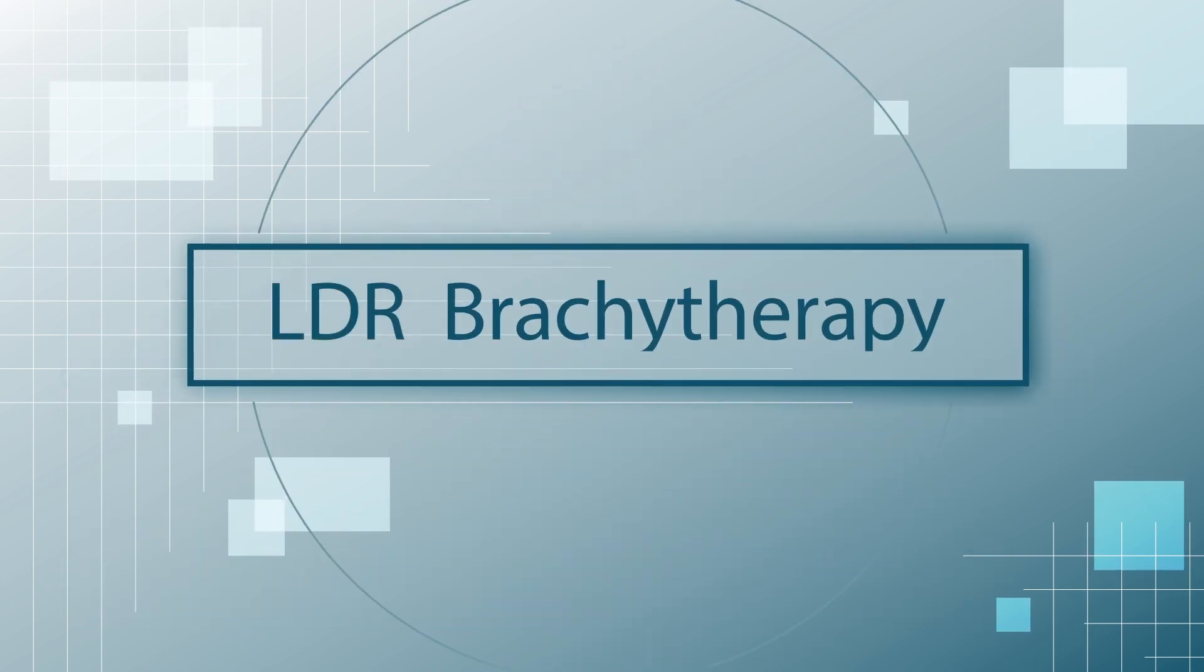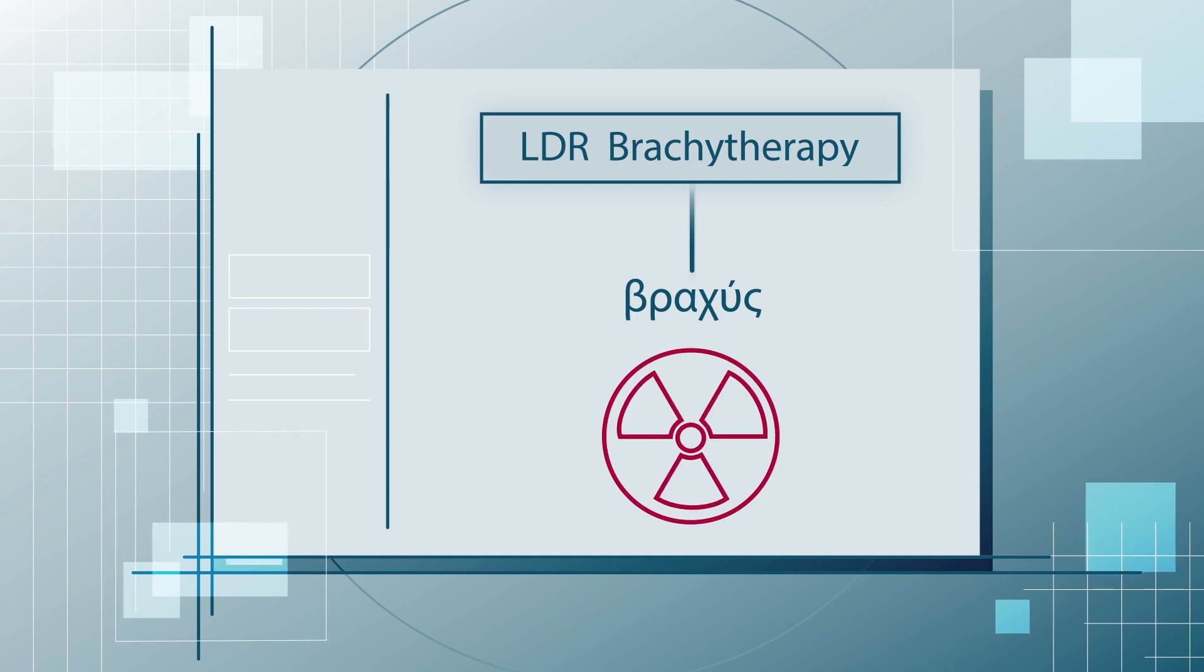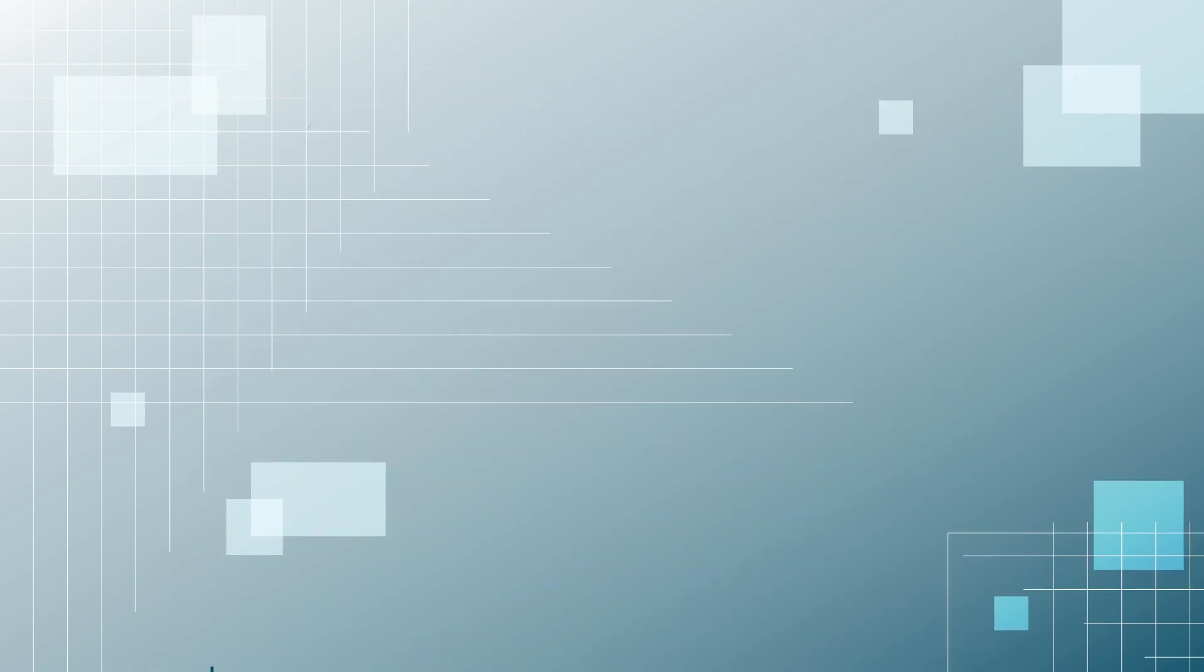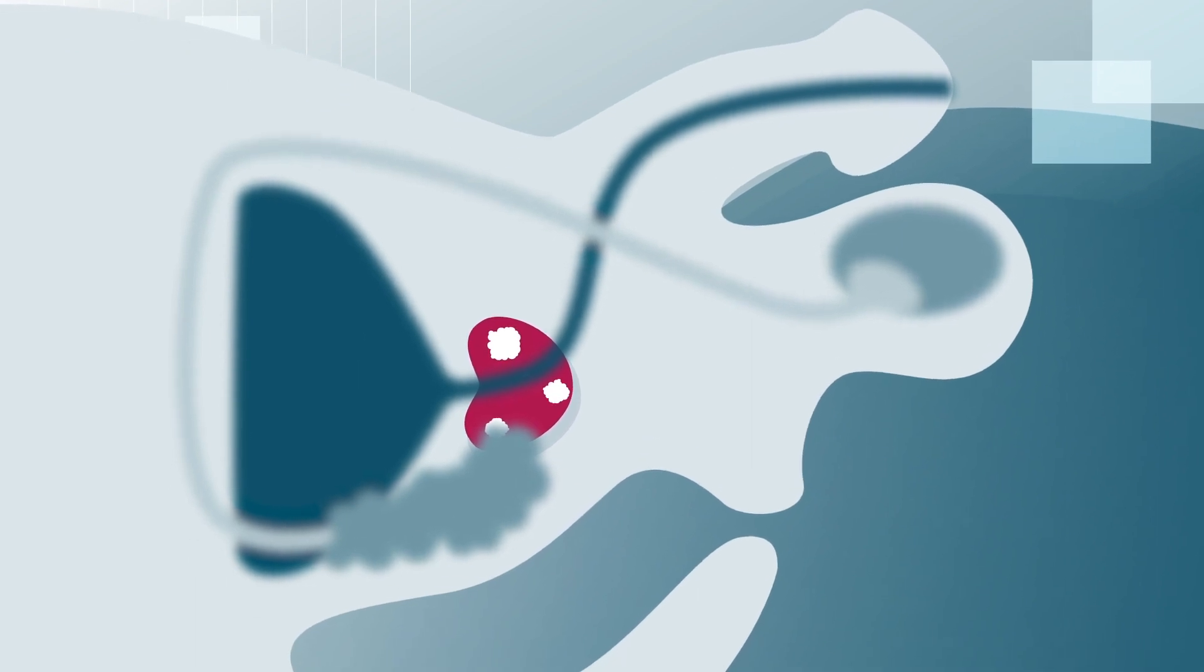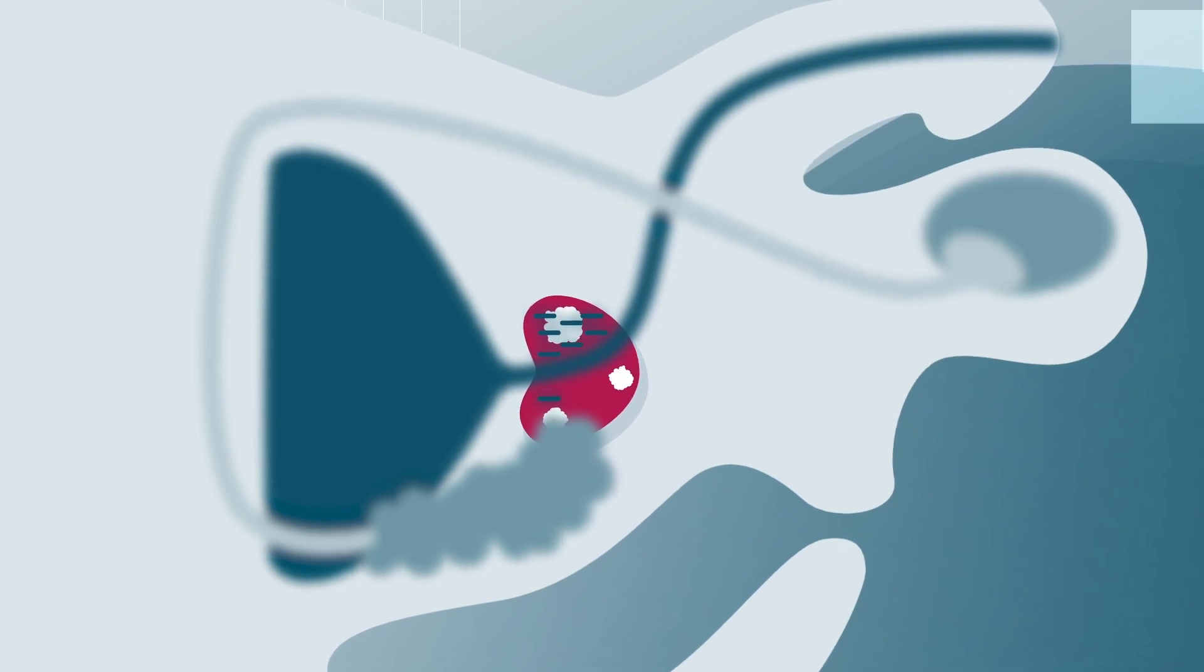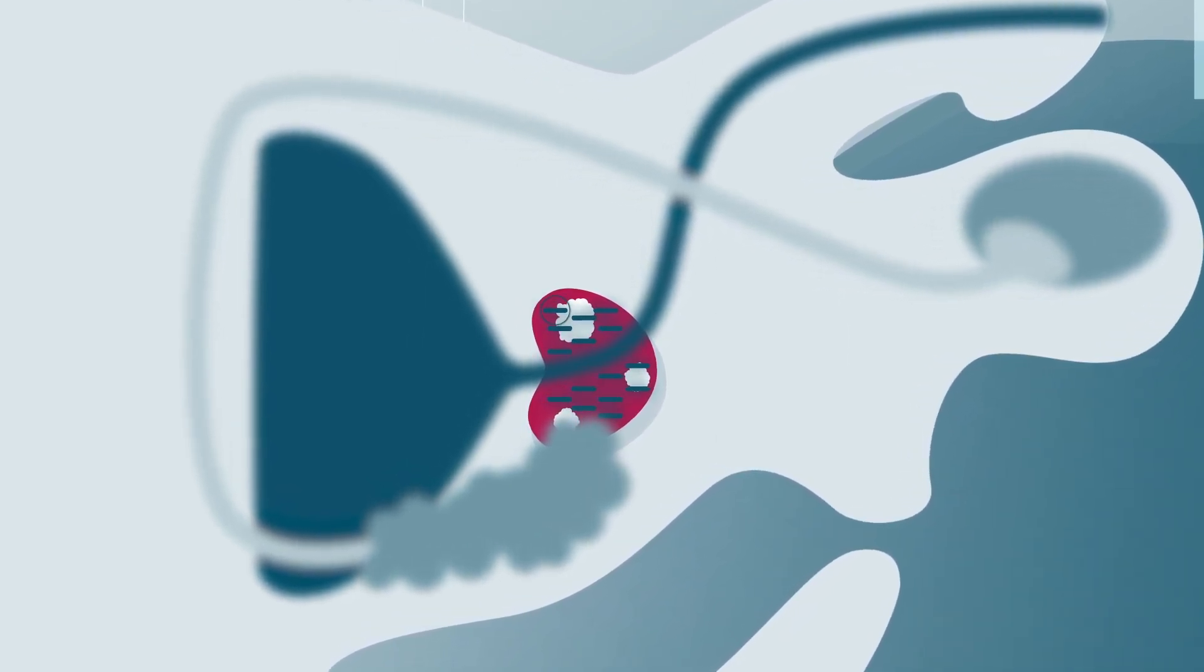In the following, we will take a closer look at LDR brachytherapy. Brachy means close and refers to the short distance between the radiation source and the tumour tissue. The radiation sources are applied directly at or in the tumour, which allows a high dose to be delivered to the tumour while sparing the surrounding healthy tissue. In LDR brachytherapy, small radioactive sources called seeds are permanently implanted in the prostate and thus directly into the tumour.